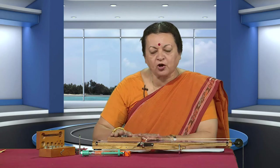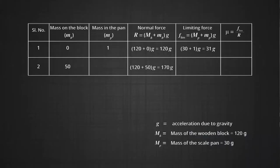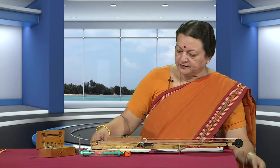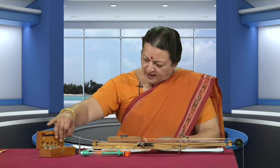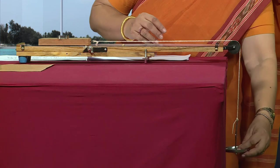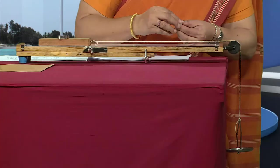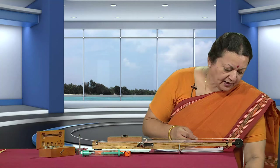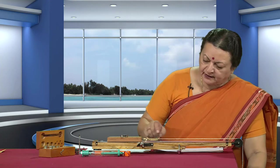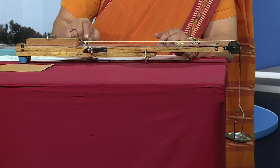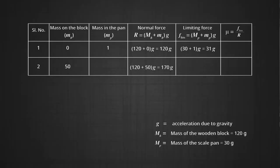For the next reading, we take a 50 gram weight and put it on top of the block, so the total weight is 120 plus 50 — giving a normal force of 170 grams. Load the pan in order to make it move. Adding 2 grams and tapping again is not moving the block, so we need to increase the pull. After adding more, we check — it moves. We add up all the weights: 7 grams in the pan, normal force 170 grams. Our second reading is recorded.